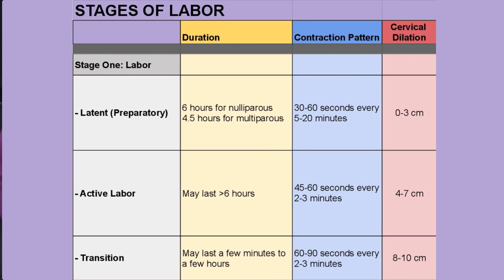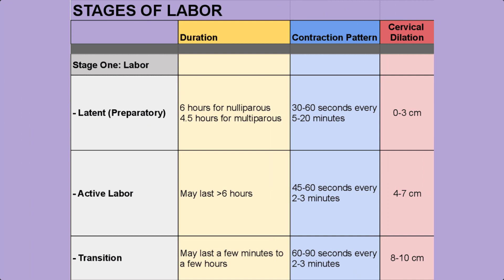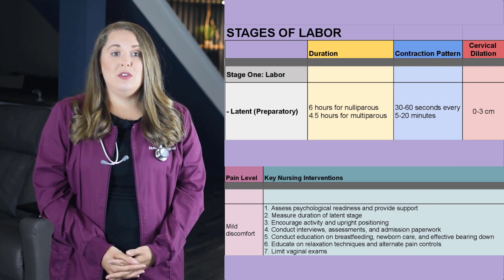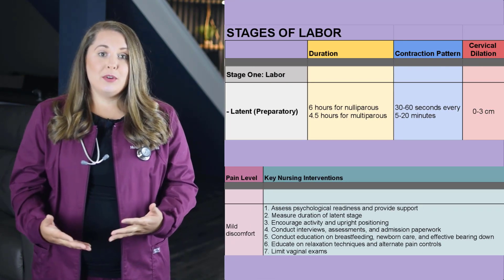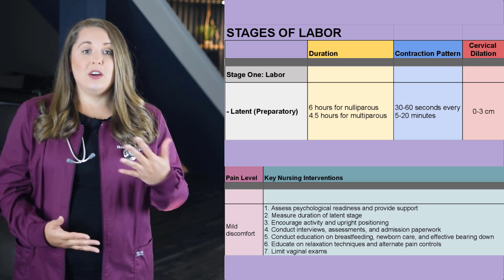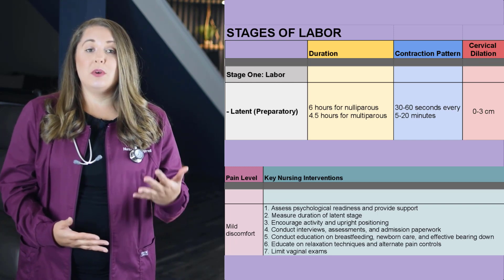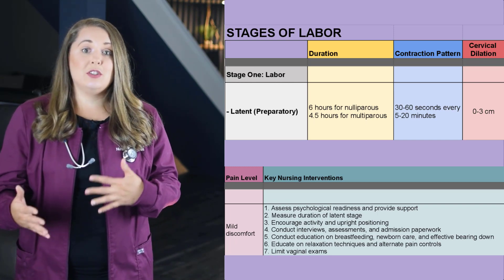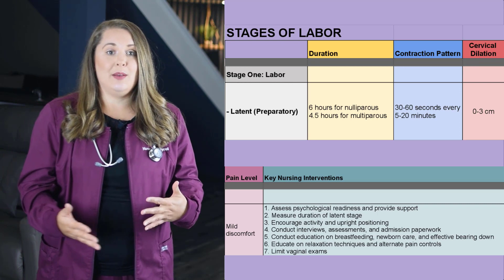The first stage of labor is divided up into three subphases: the latent phase, the active phase, and the transitional phase. The latent phase, also known as the preparatory phase, starts from the onset of true labor contractions to three centimeters cervical dilation.